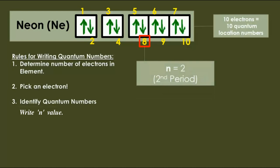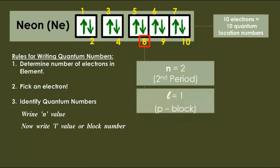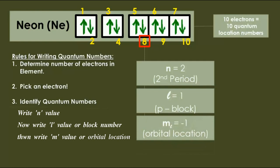First we have to write n value. That means it is in second shell, so n equal to 2. Then what do we have to write? Now write l value or block number. It belongs to p block, that means l equal to 1. Next we have to write m value.